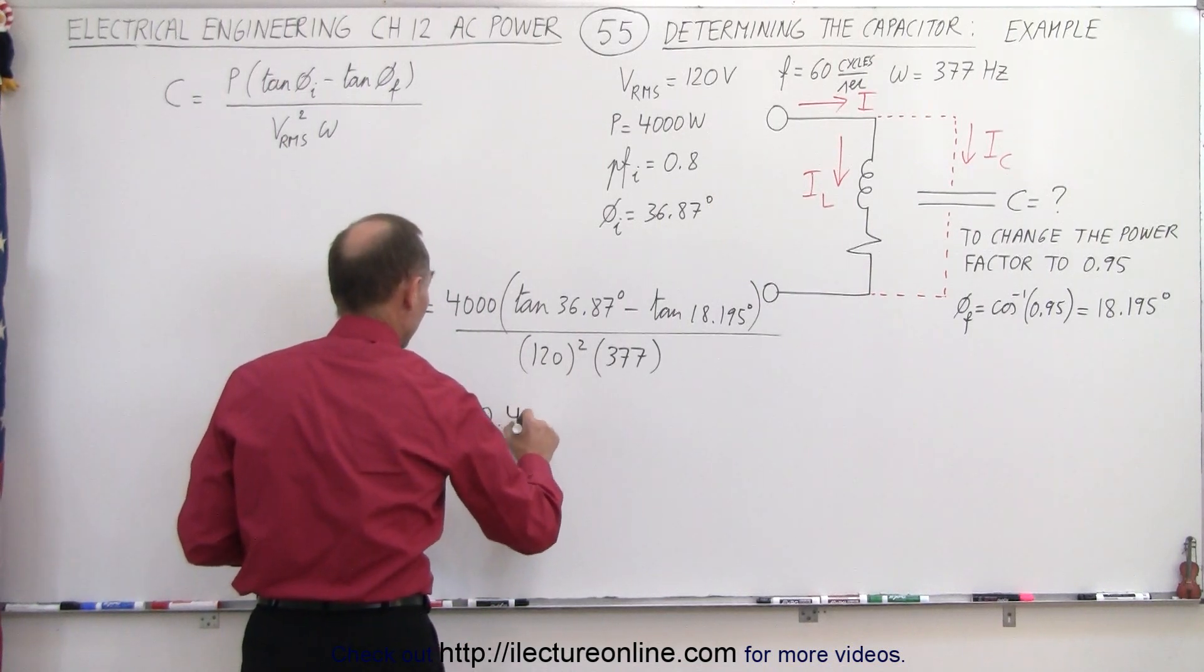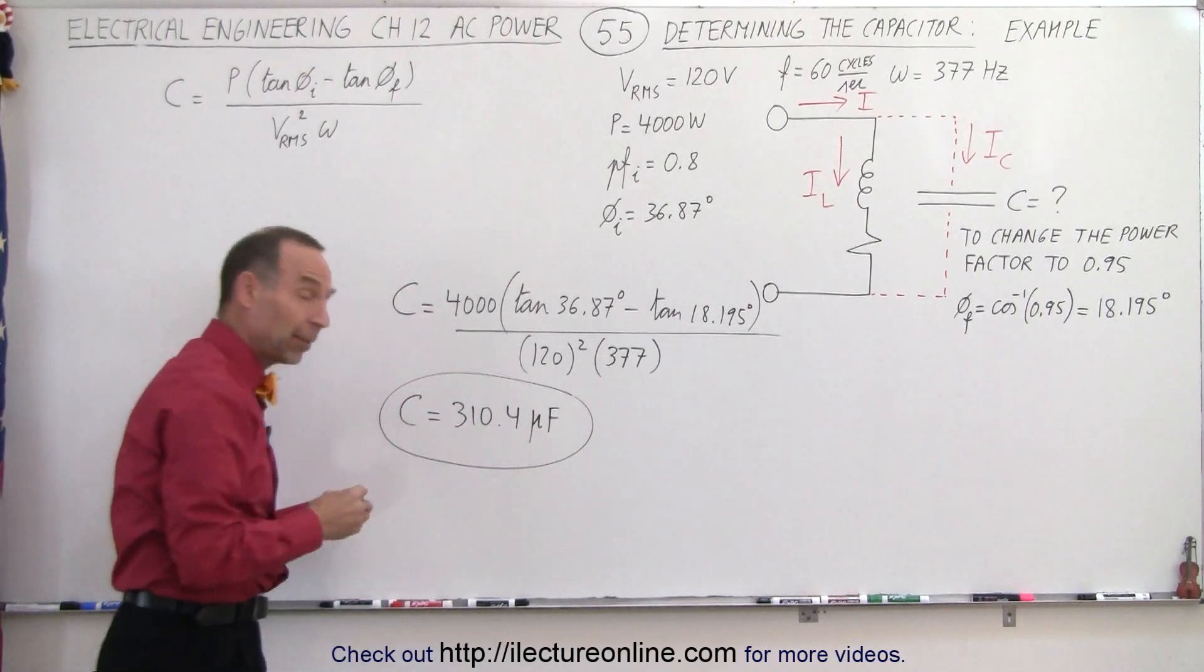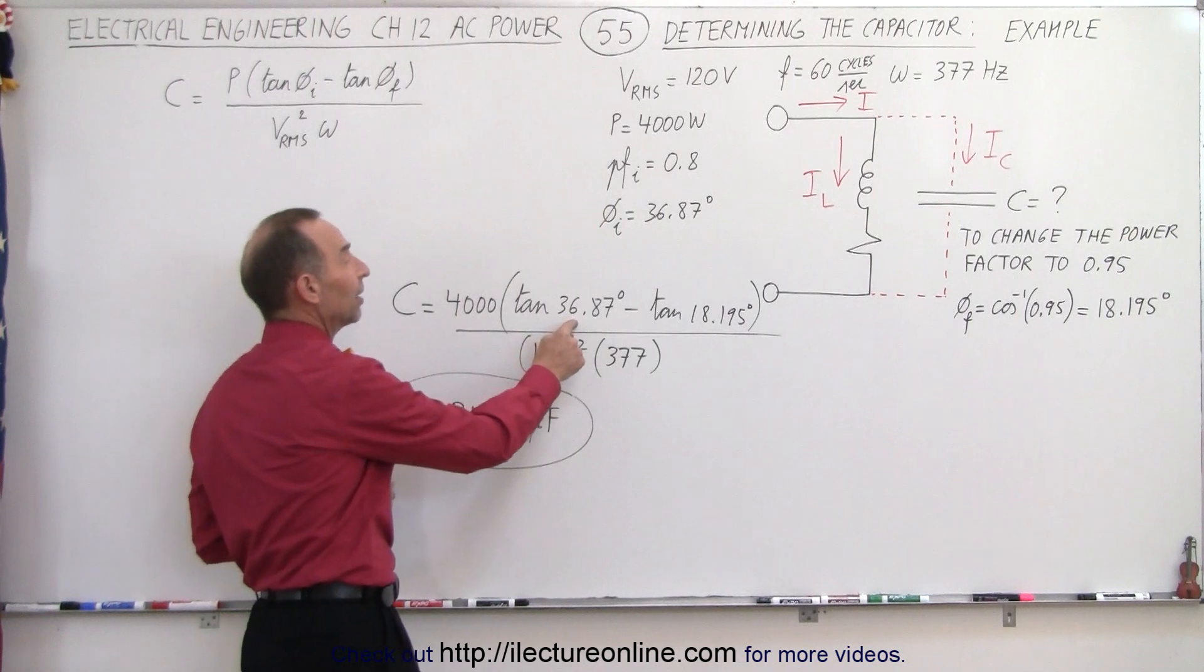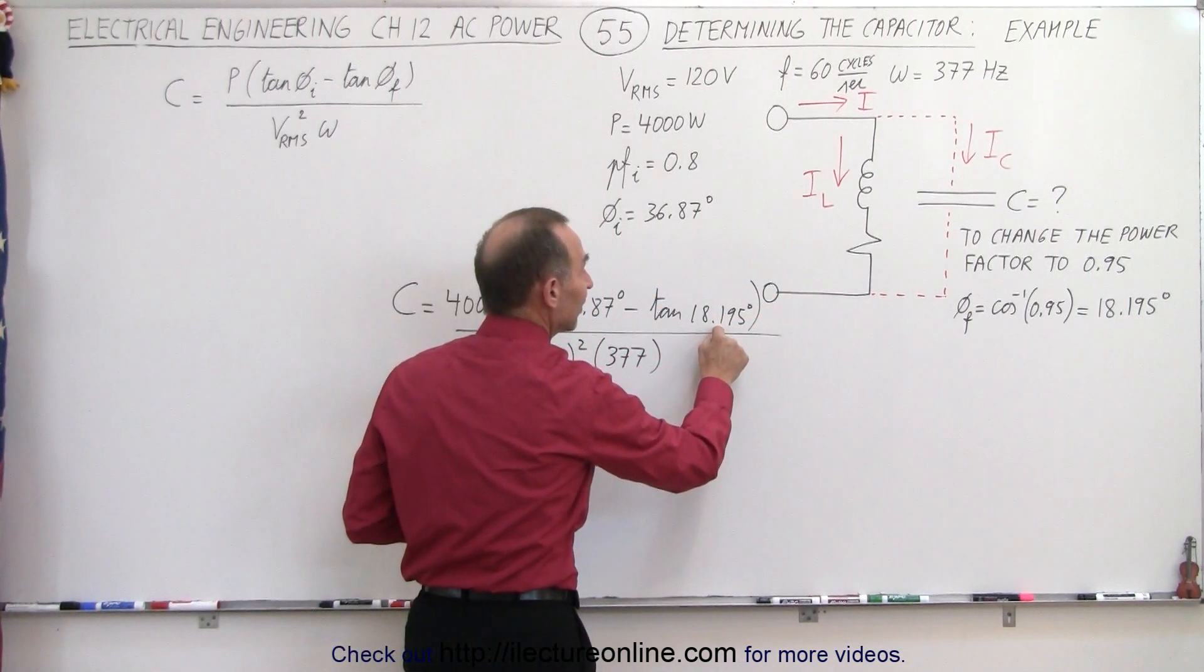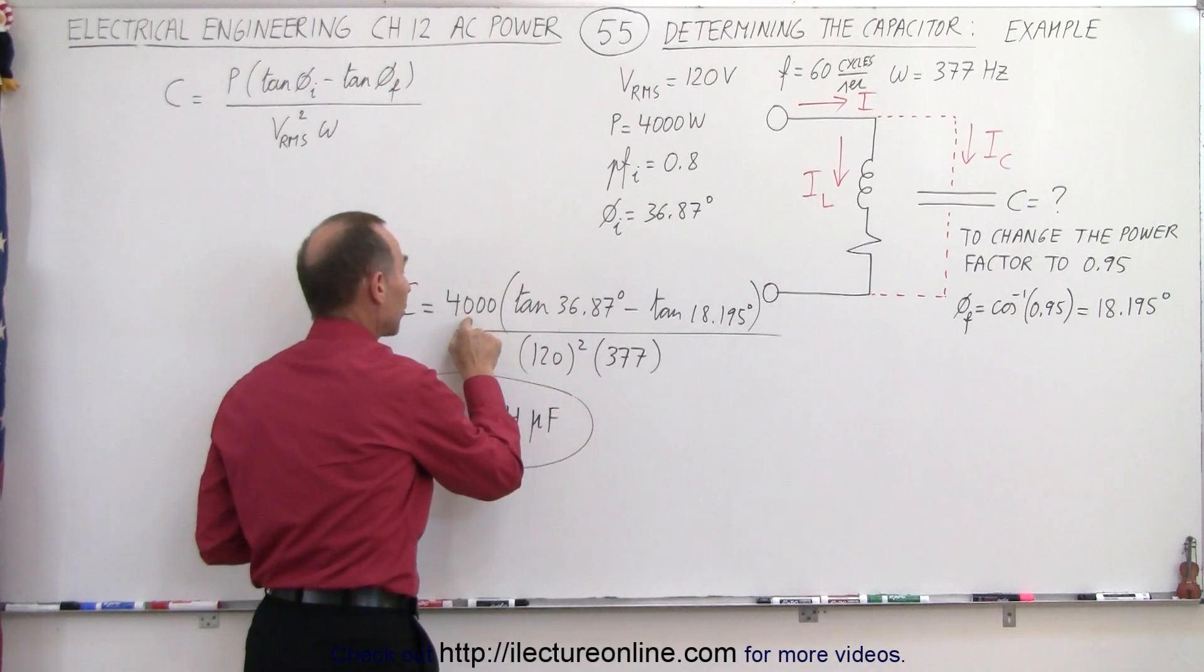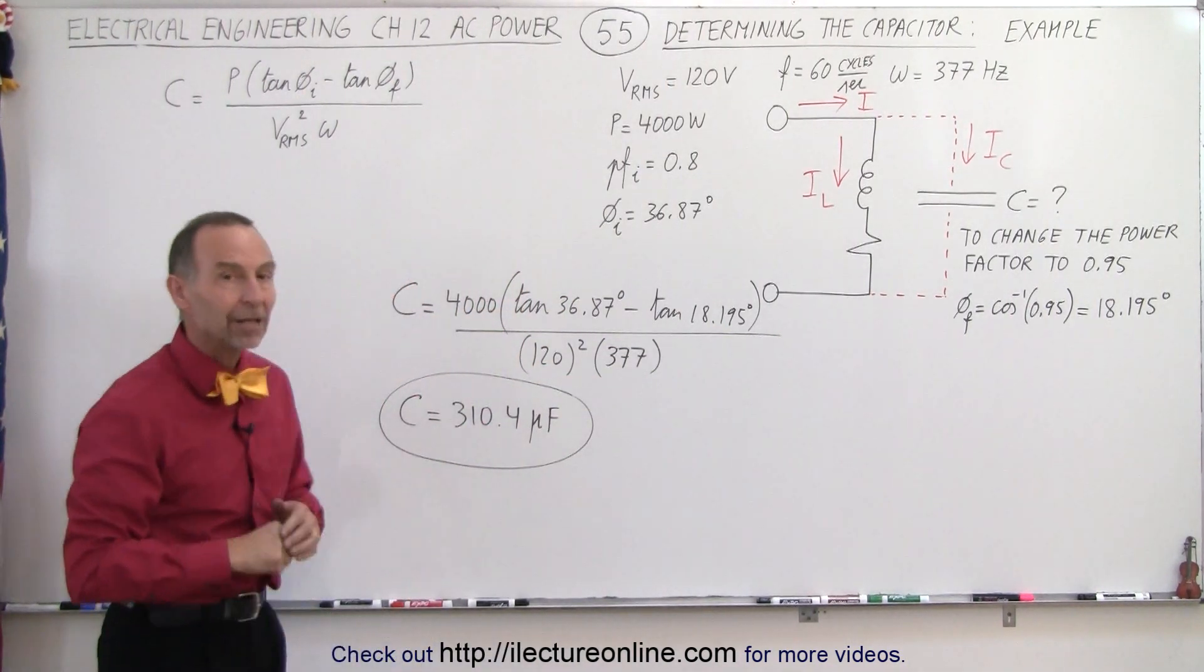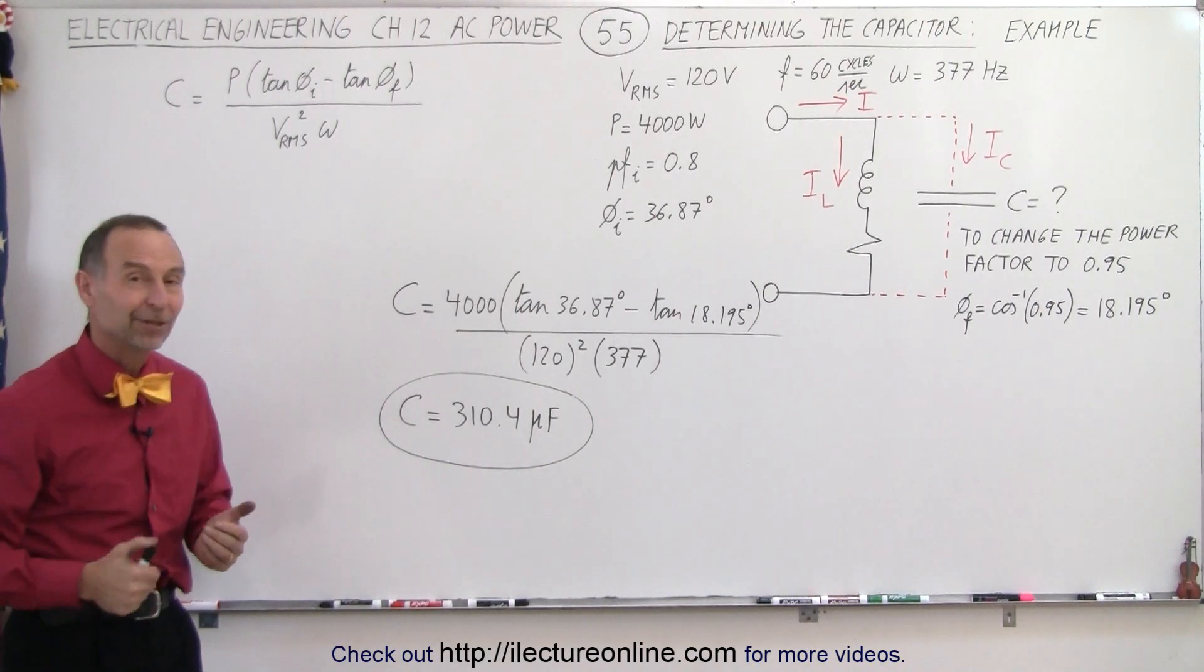310.4 microfarads. So you can see that with this equation, that becomes relatively easy. All you need to know is what your initial phase angle is, what your final power factor should be, and so we can then find the final phase angle, the power required by the load, the VRMS, and the angular frequency of the circuit, and there it is, that capacitor will take care of that, and that's how it's done.